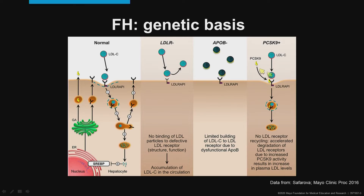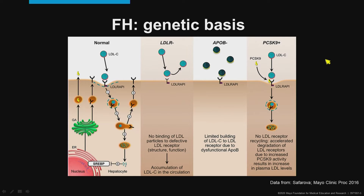Most cases of FH are due to pathogenic variant in LDLR, up to 80 percent. 10 to 15 percent may be due to a variant in apolipoprotein B, and 3 to 5 percent are due to gain of function variants in PCSK9.